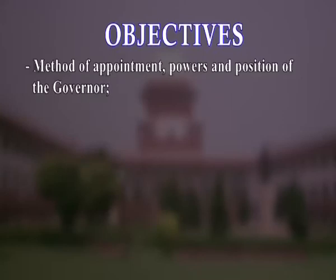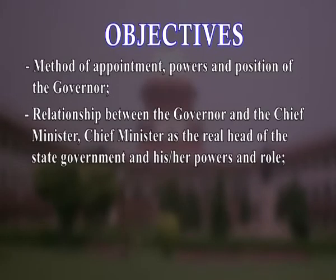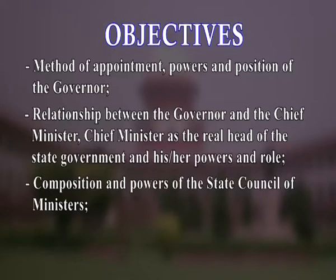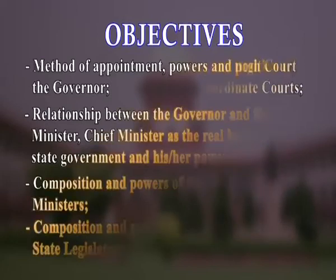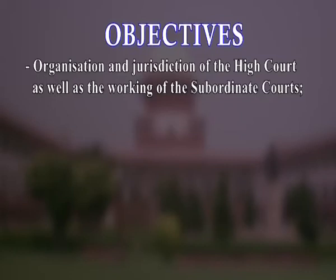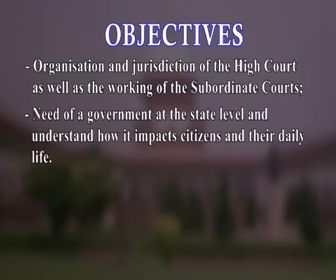Dear learners, Namaskar. I am Dr. Chunnu Prasad and the topic of your social science lesson is governance at the state level. Let me tell you very briefly the objectives of this lesson. We will discuss the methods of appointment, power and position of the governor, the relationship between the governor and the chief minister, the chief minister as the real head of the state government, the composition and powers of the state council of ministers, the state legislature, the organization and jurisdiction of the high court, and the working of subordinate courts, as well as the need of government at the state level and how it impacts citizens and their daily life.